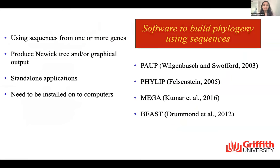Since phylogeny is a representation of the evolutionary history and relationships between groups of organisms, building simplified software is always essential in the field. Phylogenies can be built using different data inputs, which can be divided into multiple categories: first, using gene sequences — either one or multiple gene sequences; second, using genomic sequences; and third, using VCF data — that is, single nucleotide polymorphisms — from which a phylogenetic tree can be estimated and constructed.